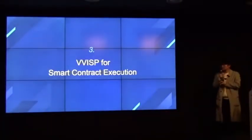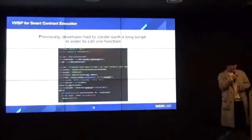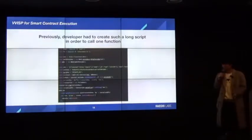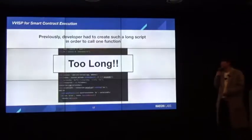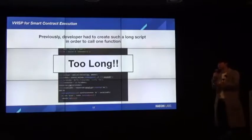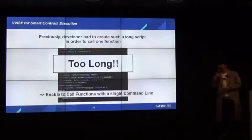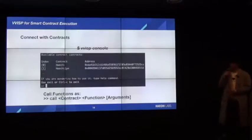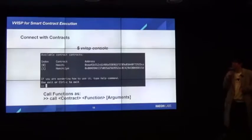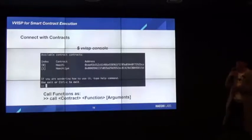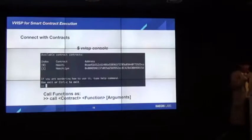The next feature is smart contract execution. Previously, developers had to create a long script just to call one function — it's too long and uncomfortable. If you're trying to get some variables from the smart contract quickly, it is not a great method; it takes a long time. Vizit enables calling functions with a single command line. When you start the Vizit console, it displays a screen with a list of deployed contracts and their assets. You can easily call functions with just the contract name, function name, and arguments.